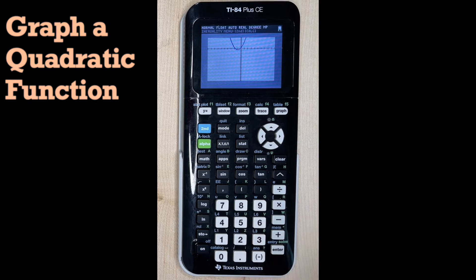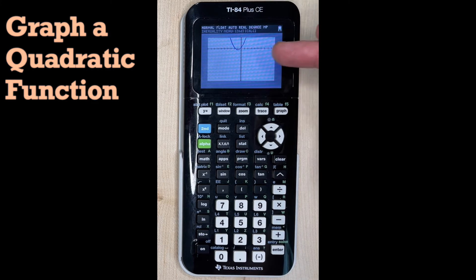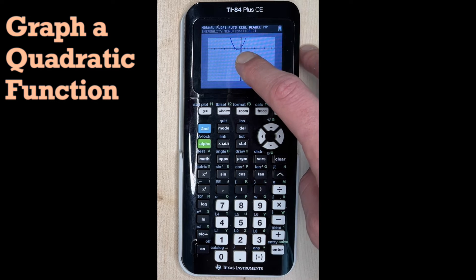Depending on what you've been doing in your calculator, your window or what you see might be a little bit off, or you might be seeing a part of the coordinate plane that you really don't care about. Here we can see that our quadratic is just really teeny tiny up at the top.